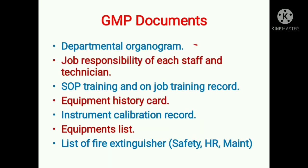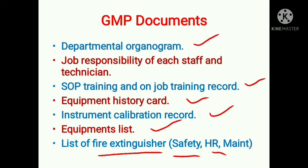Then departmental organogram, then job responsibility of each staff and technician, then SOP training record. Then equipment history card, instrument calibration record, and equipment list. Then the list of fire extinguishers — this last document is either maintained by the safety department, HR, or maintenance department, which varies from company to company.